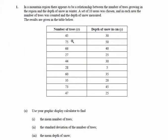In this particular question we have the following information. In a mountain range there appears to be a relationship between the number of trees growing in the region — this is our x data — and the depth of snow in winter, in centimetres — and this is our y data. So those are our two different variables.